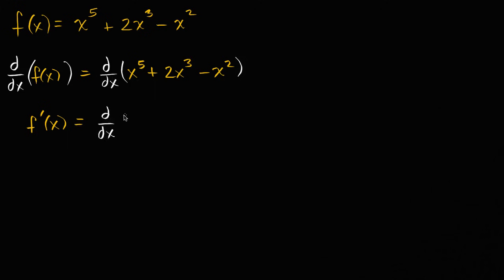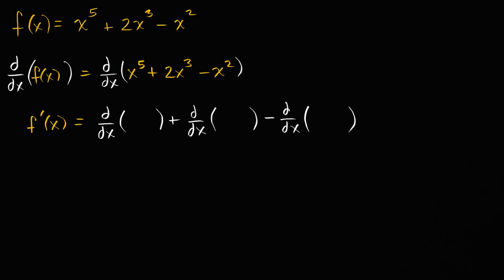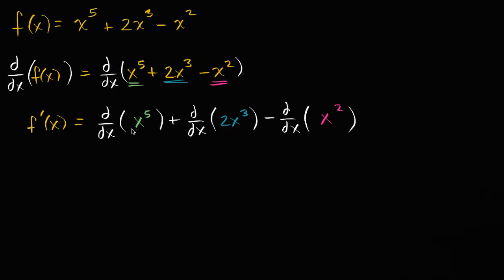So the derivative with respect to x — let me just write it out like this — of that first term, plus the derivative with respect to x of that second term, minus the derivative with respect to x of that third term. And I'll color code it here. So here I had x to the fifth, here I had two x to the third, and here I'm subtracting an x squared, so I'm subtracting the derivative with respect to x of x squared. All that's happening is I'm taking the derivative individually of each term, then adding or subtracting them the same way the terms were combined.